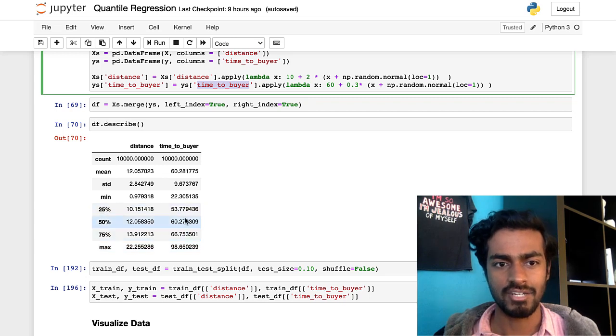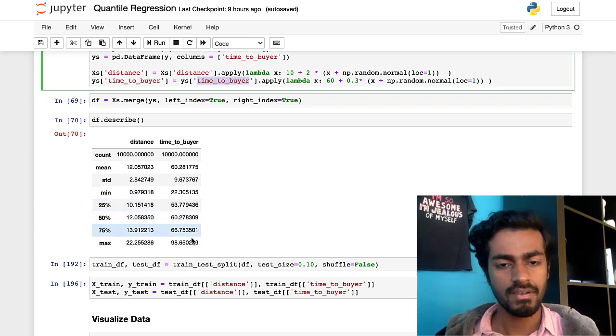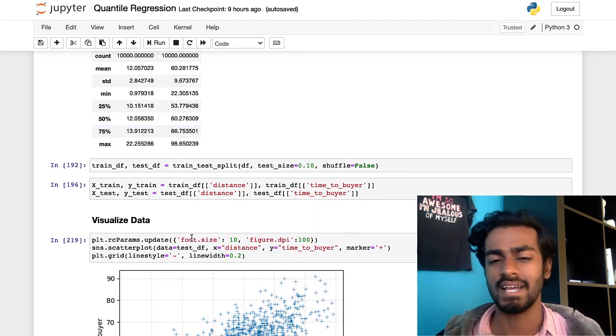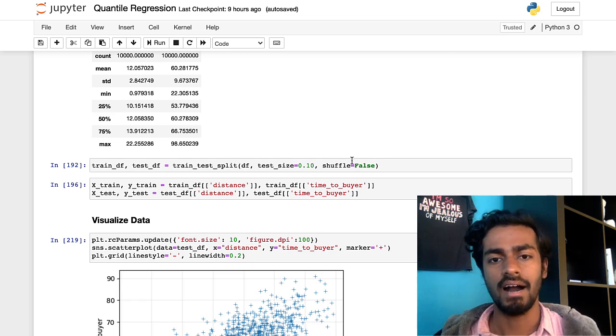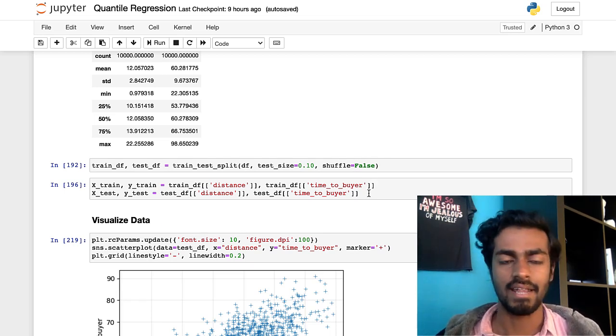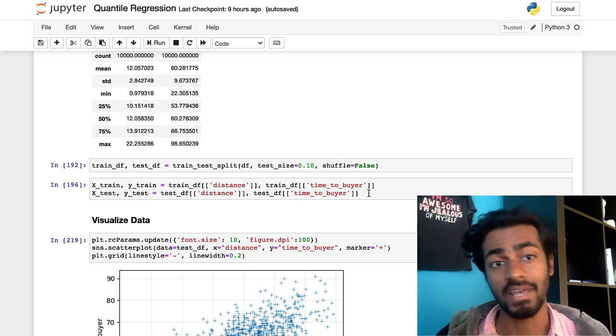And if you kind of look at the distribution of like the feature and the label they kind of do look pretty legitimate. Right here I'll split into train and test sets which is like a 90-10 split and then yeah that's it, that's all about getting our data so we have our data on hand and now we can play around with it.